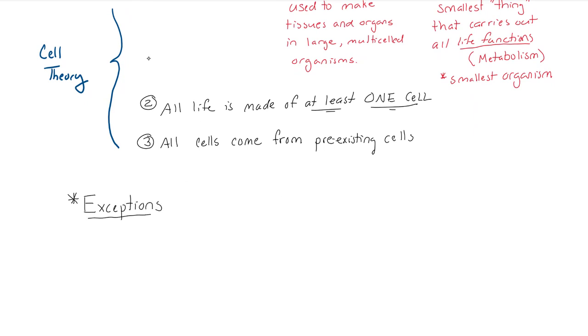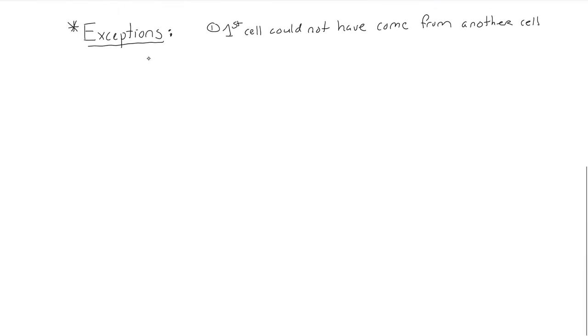There are some exceptions to the cell theory. First, the first cell could not have possibly come from another cell, because then it would not have been the first cell. So where the heck did this first cell come from?